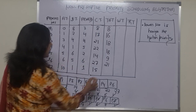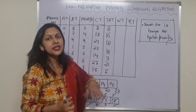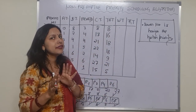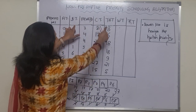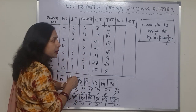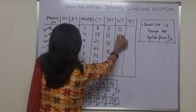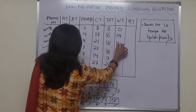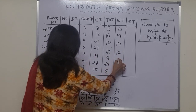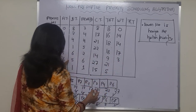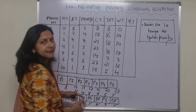P7 turnaround time = 15 − 10 = 5. Now we calculate the waiting time using the formula: Waiting Time = Turnaround Time − Burst Time. So: P1 = 8 − 8 = 0, P2 = 16 − 2 = 14, P3 = 18 − 4 = 14, P4 = 18 − 1 = 17, P5 = 9 − 6 = 3, P6 = 21 − 5 = 16, P7 = 5 − 1 = 4.